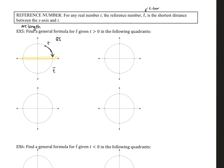For quadrant 2, we're always referring back to the x-axis. The shortest distance is going to be t̄ = π - t. Why does that make sense? The whole distance from (1,0) to (-1,0) going counterclockwise is π. So to figure out the small remaining chunk, we take π and subtract the t value to find the reference number.